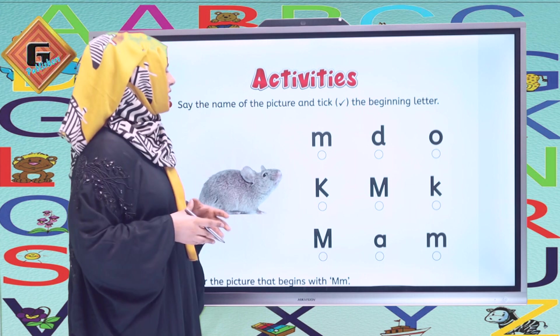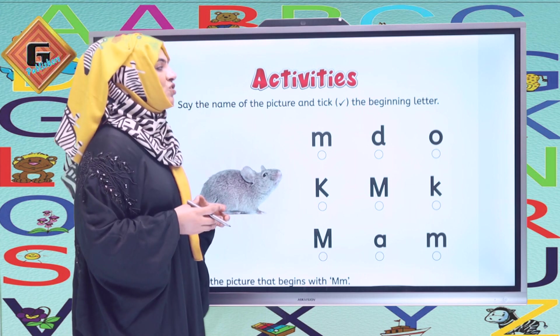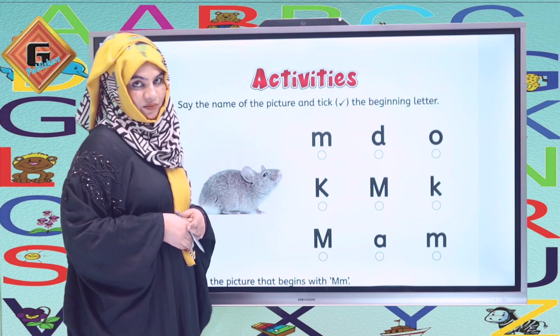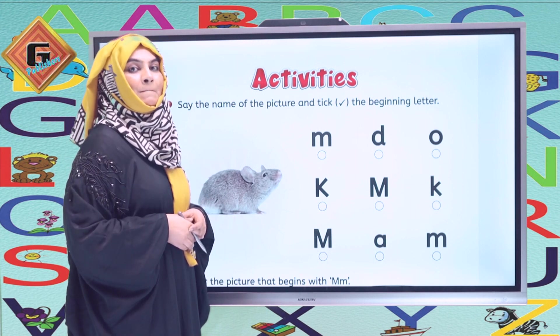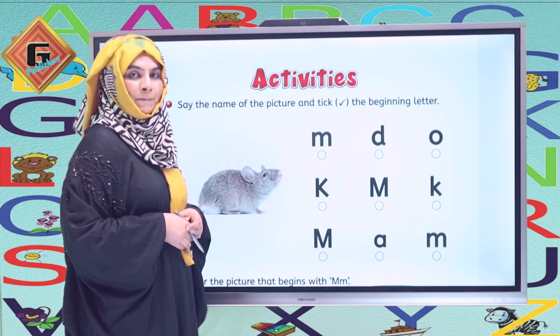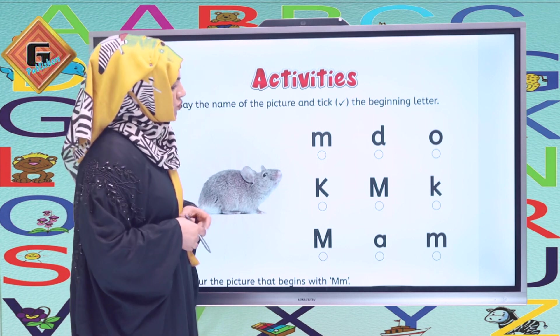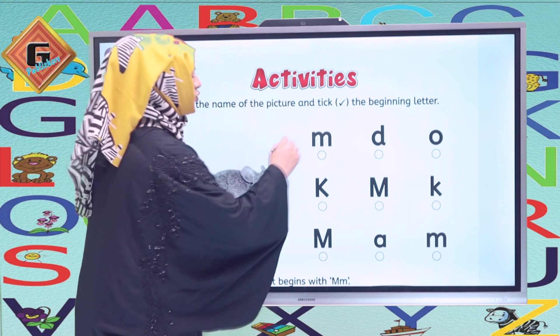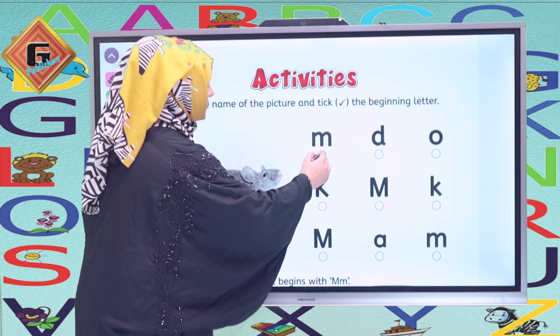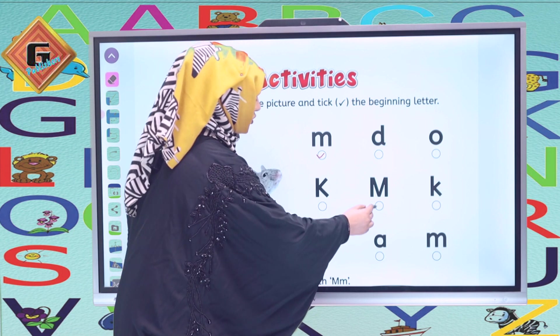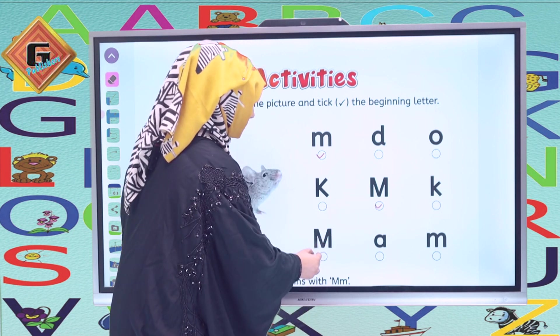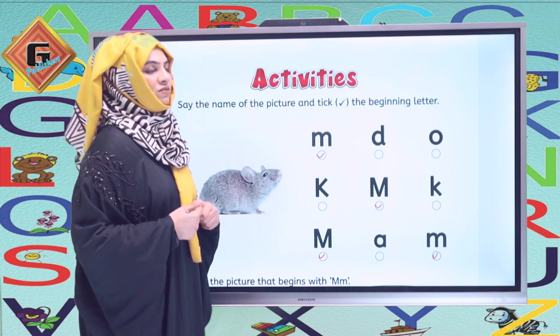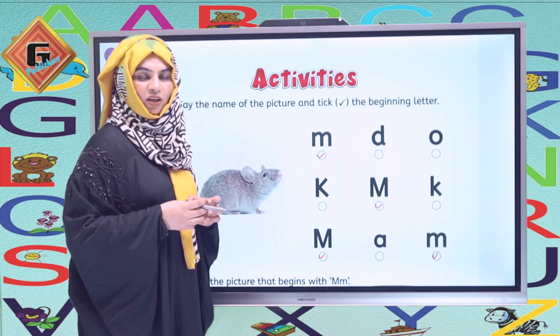This is page number 43 and now we are going to do some activities. The first one is: say the name of the picture and tick the beginning letter. What is it in the picture? This is a mouse. M, mouse. Is this 'we'? No. We are going to tick all the M, so we have some capital M and small M. We have all M ticked. This is how we are going to solve this activity.